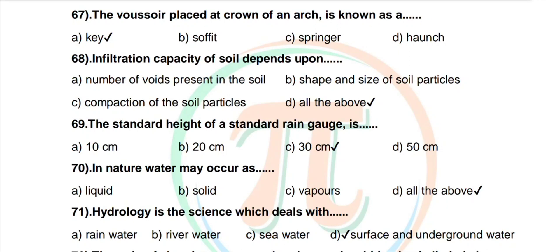Question 70: In nature, water may occur as — options: liquid, solid, vapour, all of the above. Correct answer: all of the above. Question 71: Hydrology is the science which deals with — options: rain water, river water, sea water, surface and underground water. Correct answer: surface and underground water.